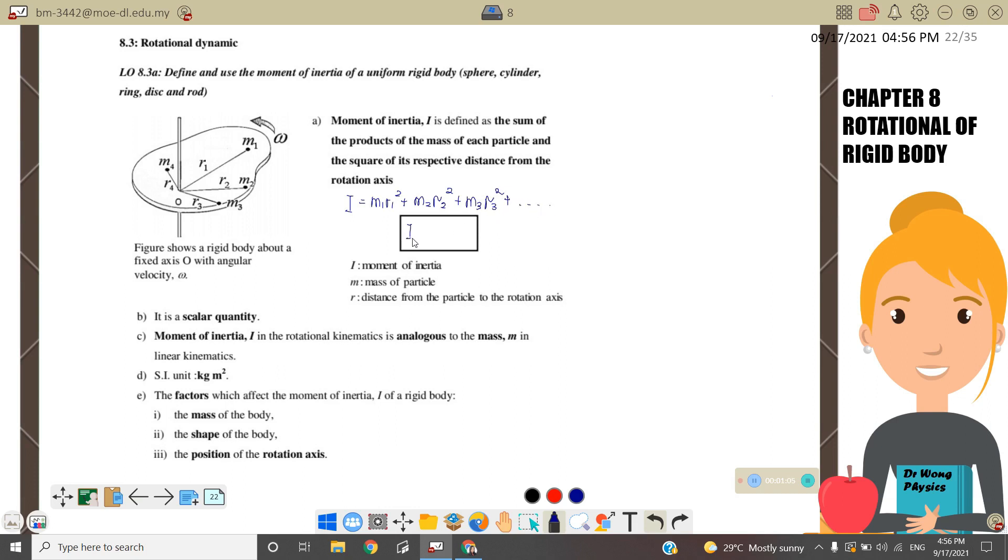In conclusion, we can write that moment of inertia equals the total of M times R square. Moment of inertia is a scalar quantity and in rotational kinematics is analogous to mass in linear kinematics.